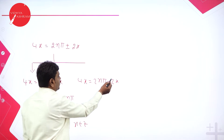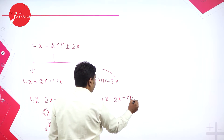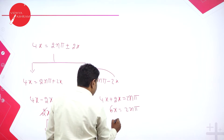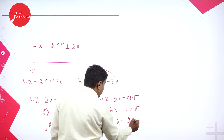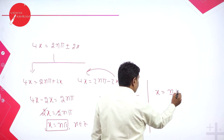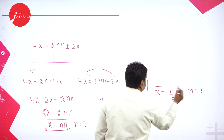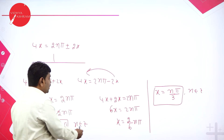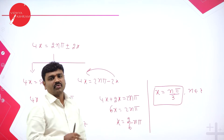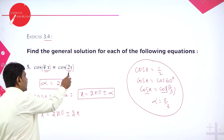The other solution: 4x equals 2n pi minus 2x, bringing 2x to this side gives 4x plus 2x equals 2n pi, so 6x equals 2n pi, and x equals n pi by 3. Where n belongs to integers. So the solution set is x equals n pi or x equals n pi by 3. The problem is in the form cos 4x equals cos 2x, so alpha is directly 2x. Another method is to bring cos 2x to the LHS and use the cos c minus cos d transformation.